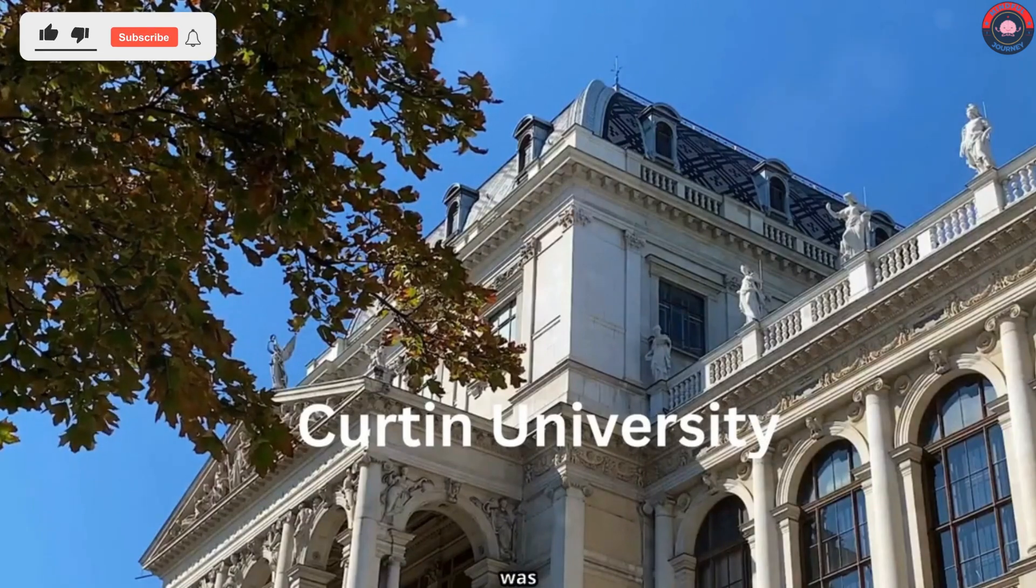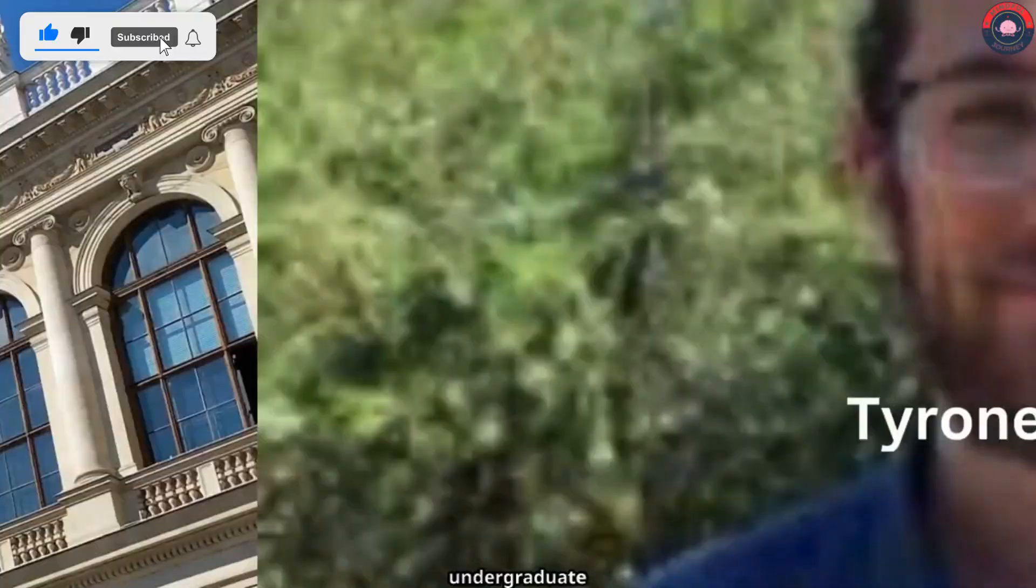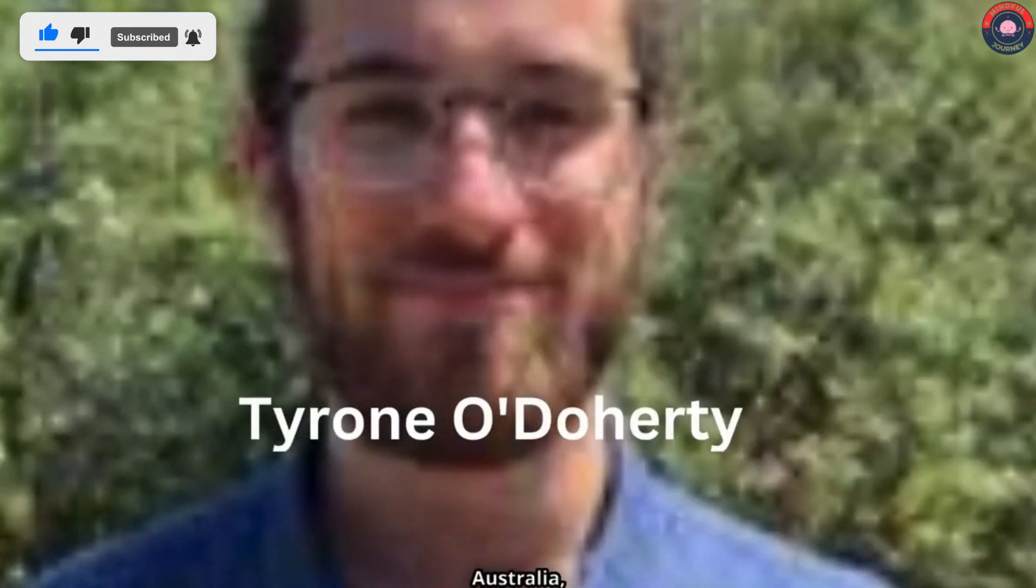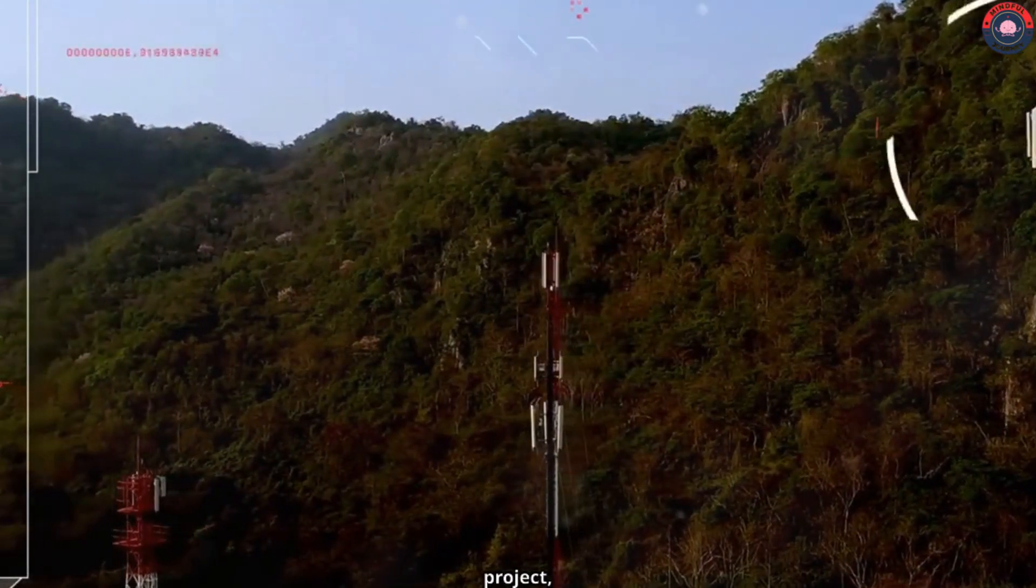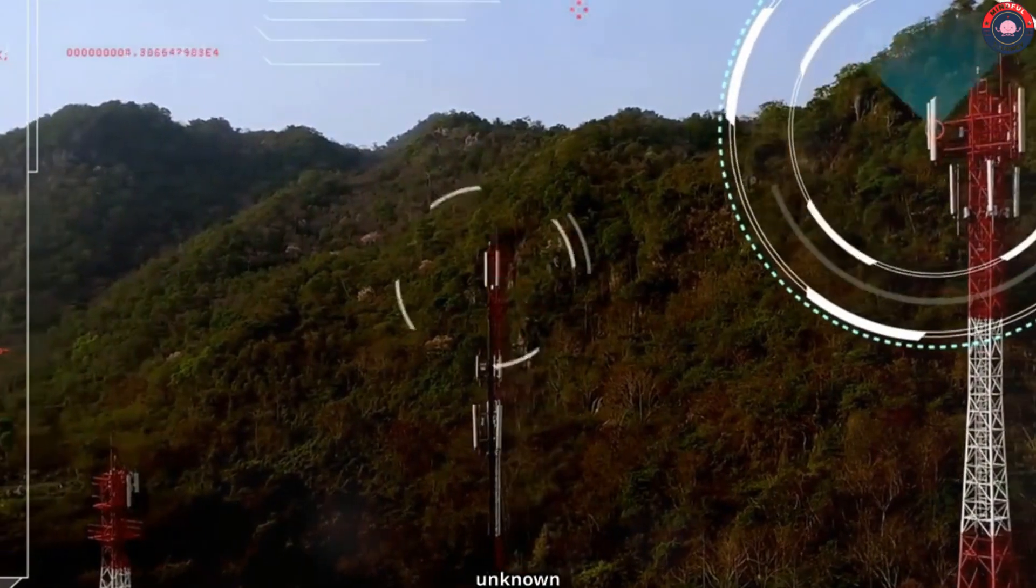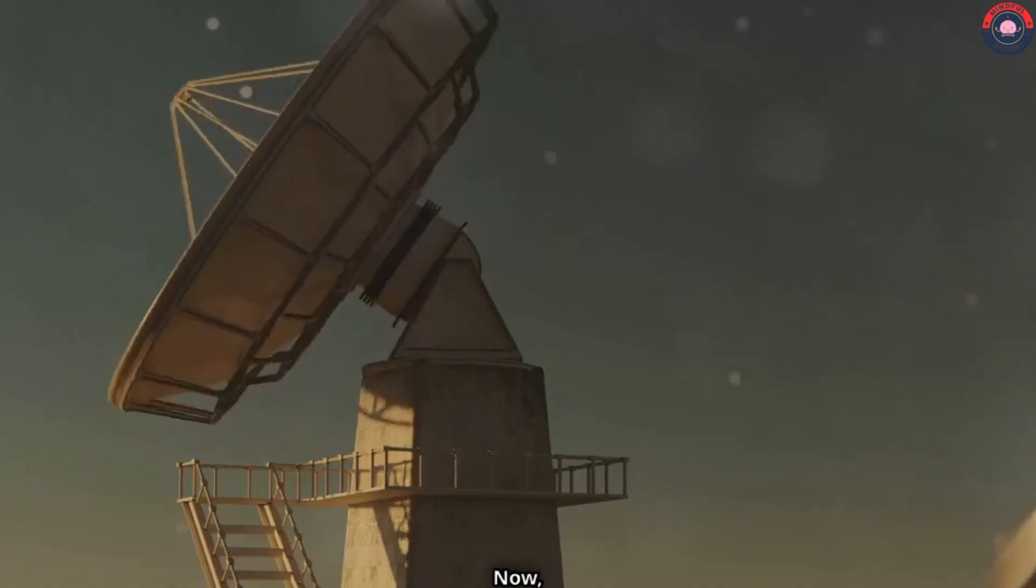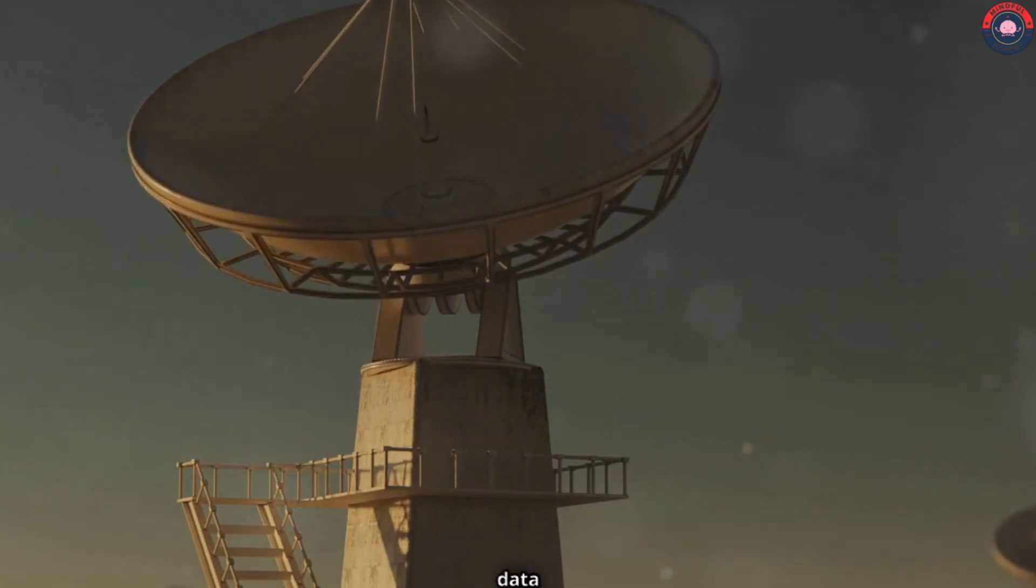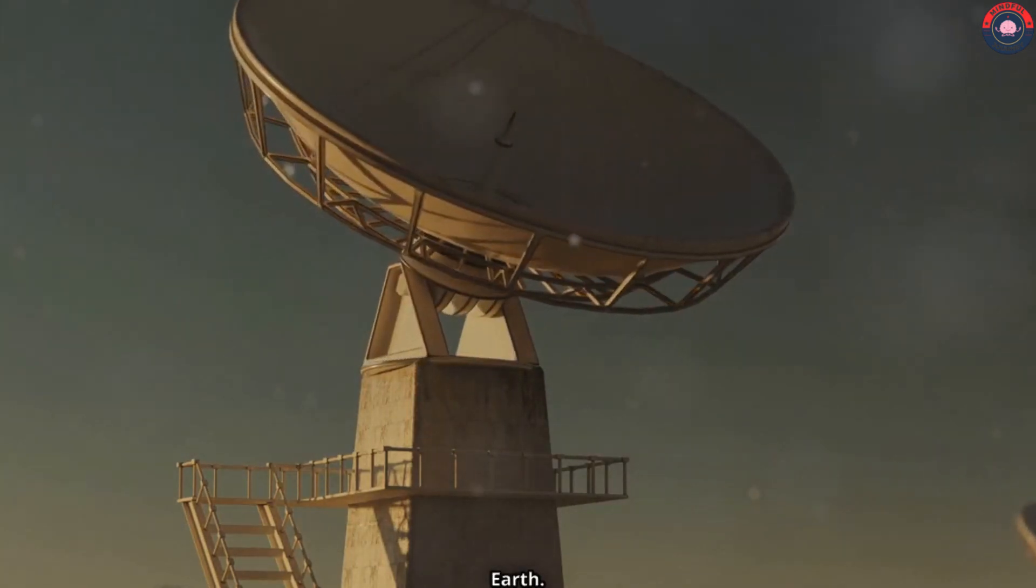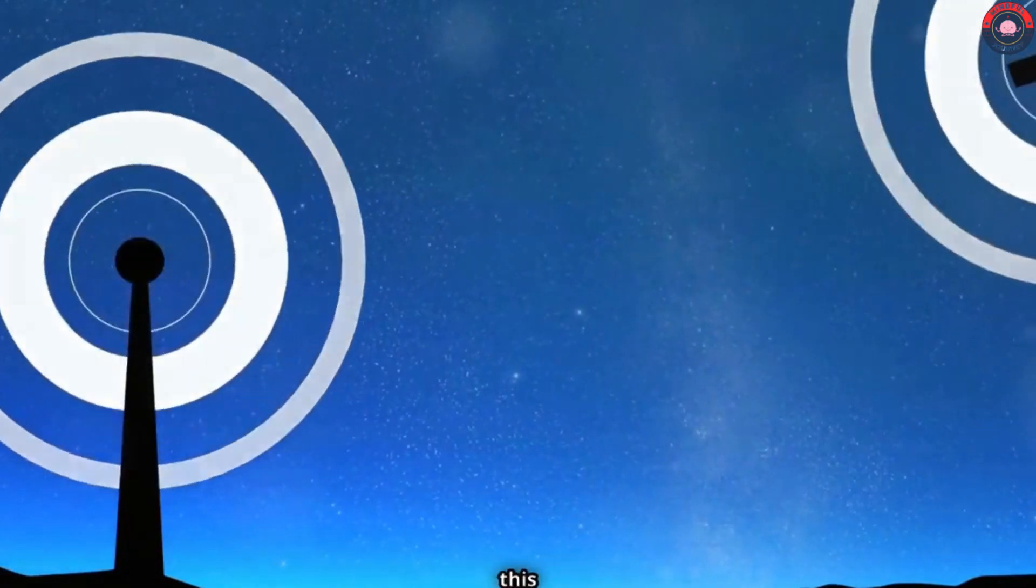Actually, the story of this signal starts with another signal which was found in the year 2020 by an undergraduate student of Curtin University in Australia, Tyrone Doherty. Doherty was working on a project under which he was identifying unknown blinking radio signals from old data of the southern sky. During this project, he got a radio signal from the data of 2018.